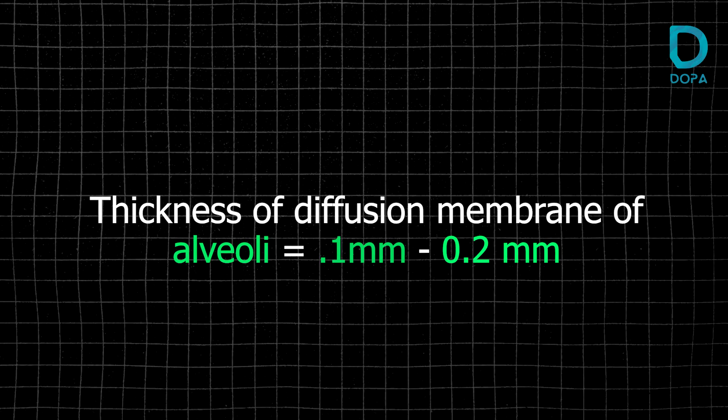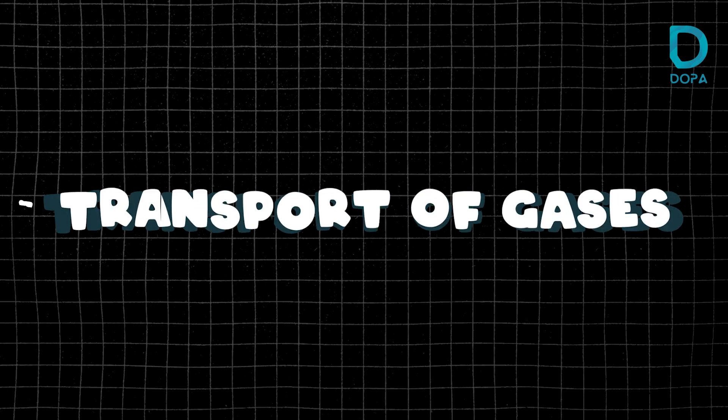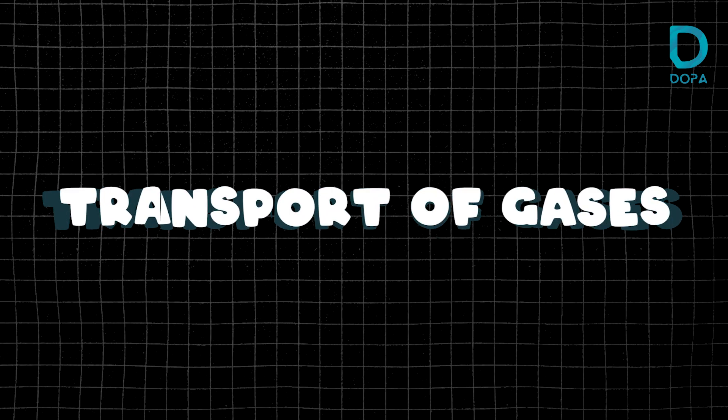This is our diffusion membrane — the alveoli — and its thickness is 0.1 mm to 0.2 mm. Now we are going to talk about the transport of gases. Oxygen is 97% oxyhemoglobin.